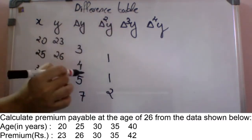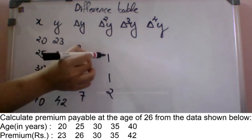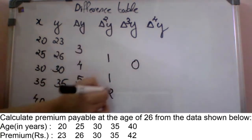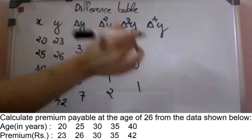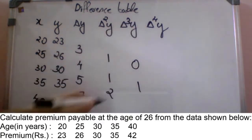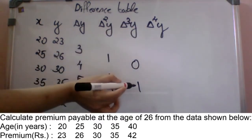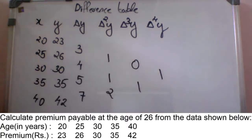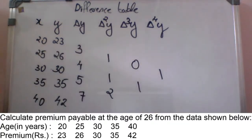For delta cube y, we take differences of the delta square y column: 1 minus 1 is 0, and 2 minus 1 is 1. For delta raised to 4y, the difference is 1 minus 0, which equals 1. This completes the difference table.